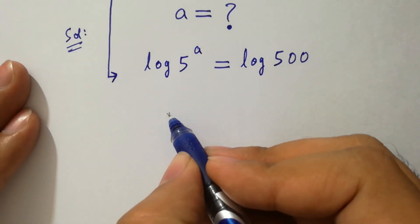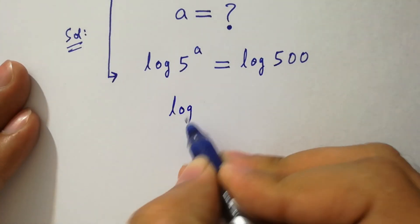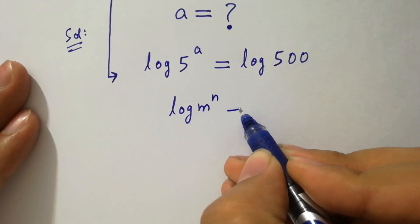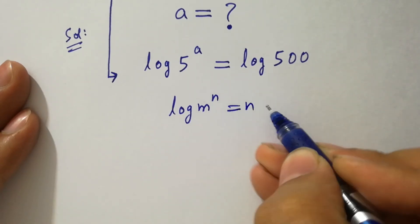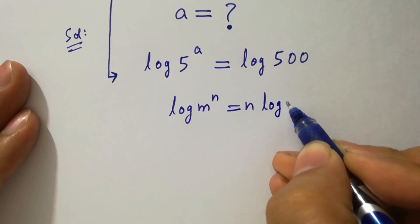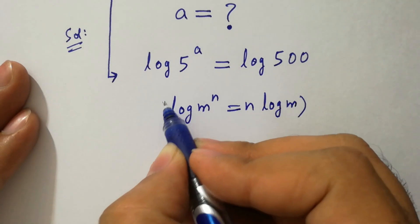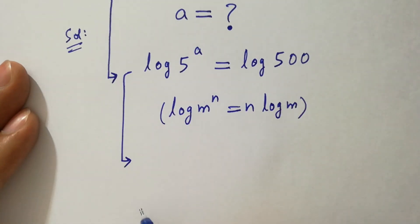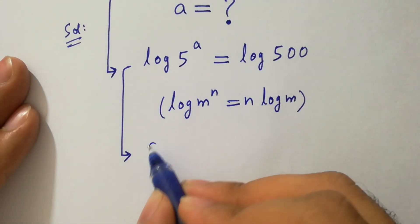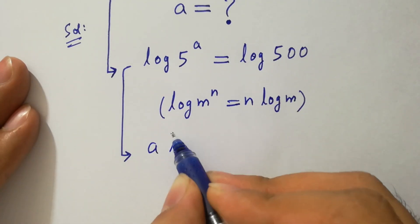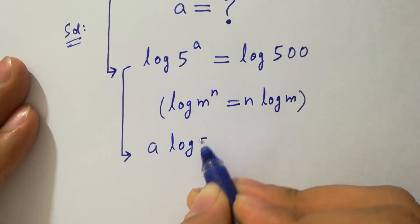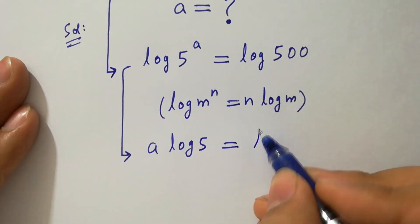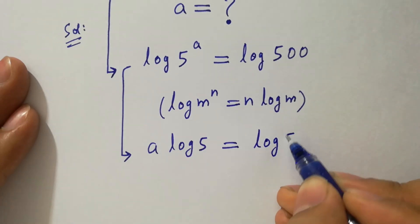As log m to the power n equals n log m, that will be a log 5 equals log 500.